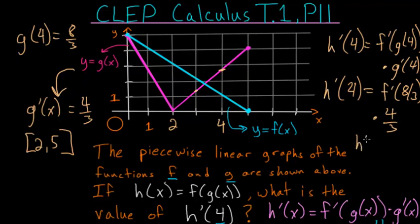So h'(4), then is equal to f'(8 thirds), which is 2 and 2 thirds. So we need the derivative of the function f, this blue line here, at an x value of 2 and 2 thirds.